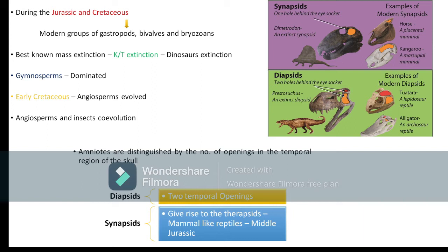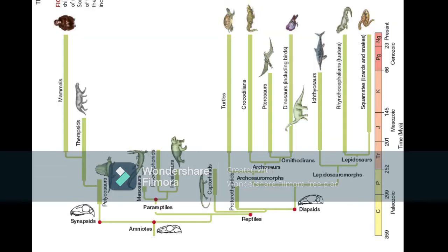Mammal-like reptiles evolved in the Jurassic, but modern mammals fully evolved and diversified in the Cenozoic era. Looking at the phylogenetic tree, from amniotes both synapsids and reptiles evolved. Amniotes are also ancestors of reptiles, and those reptiles became the diapsids. There were also para-reptiles like Mesosaurus that are now extinct.